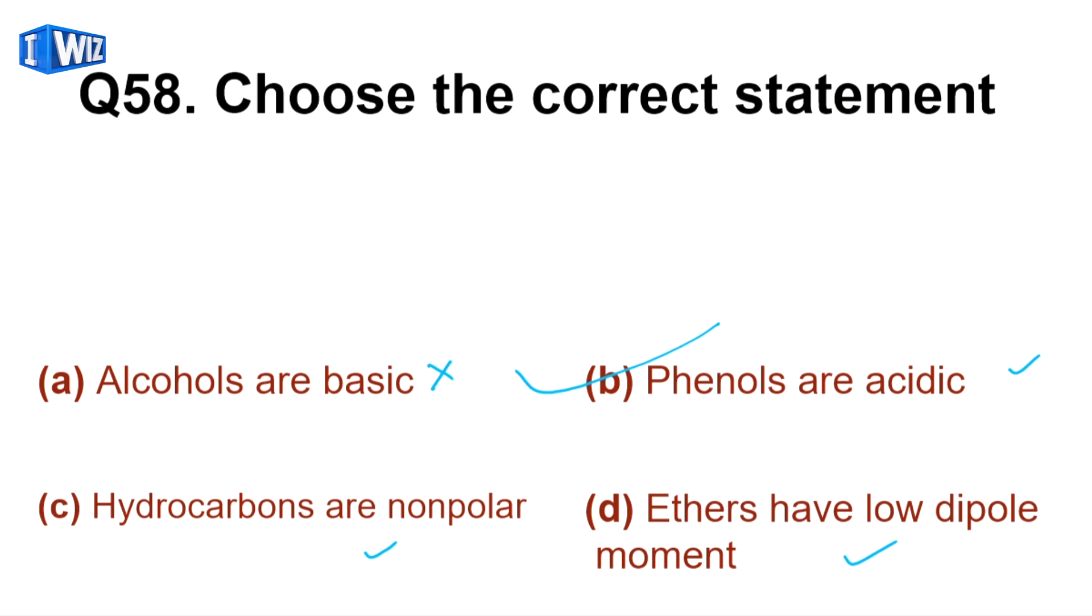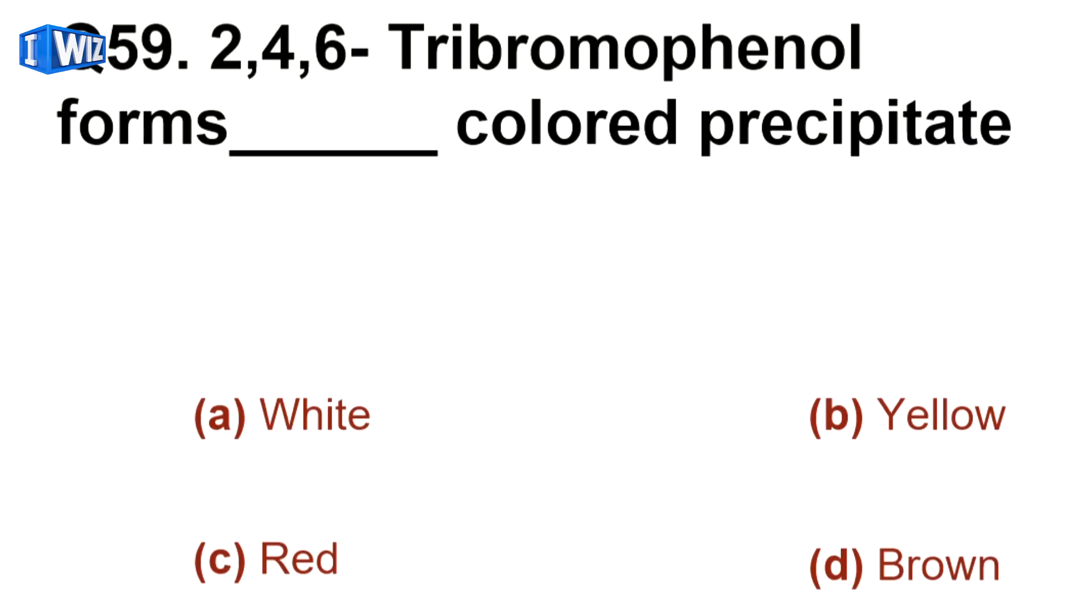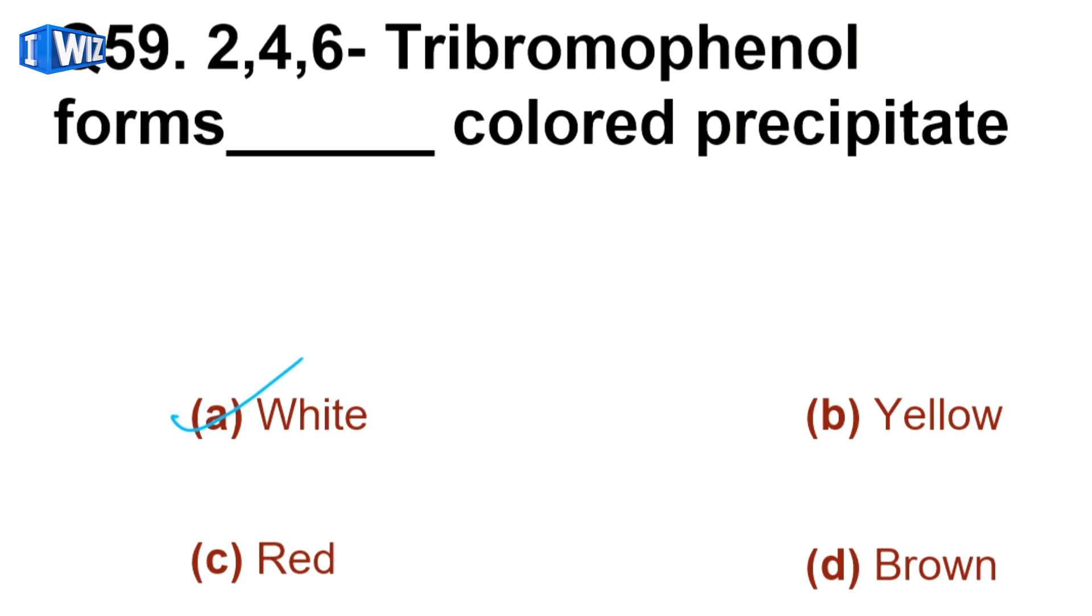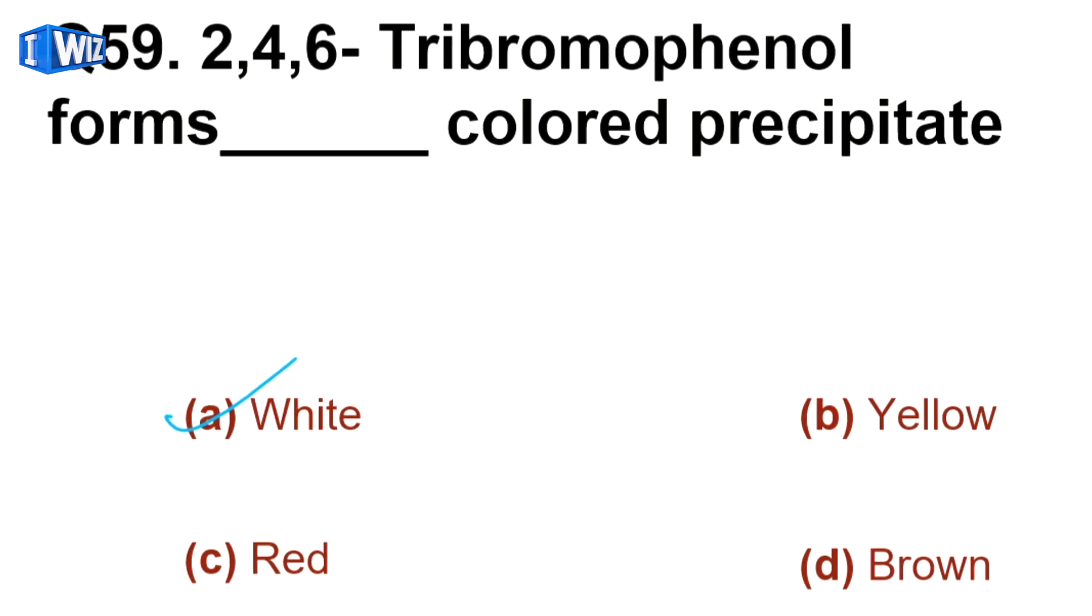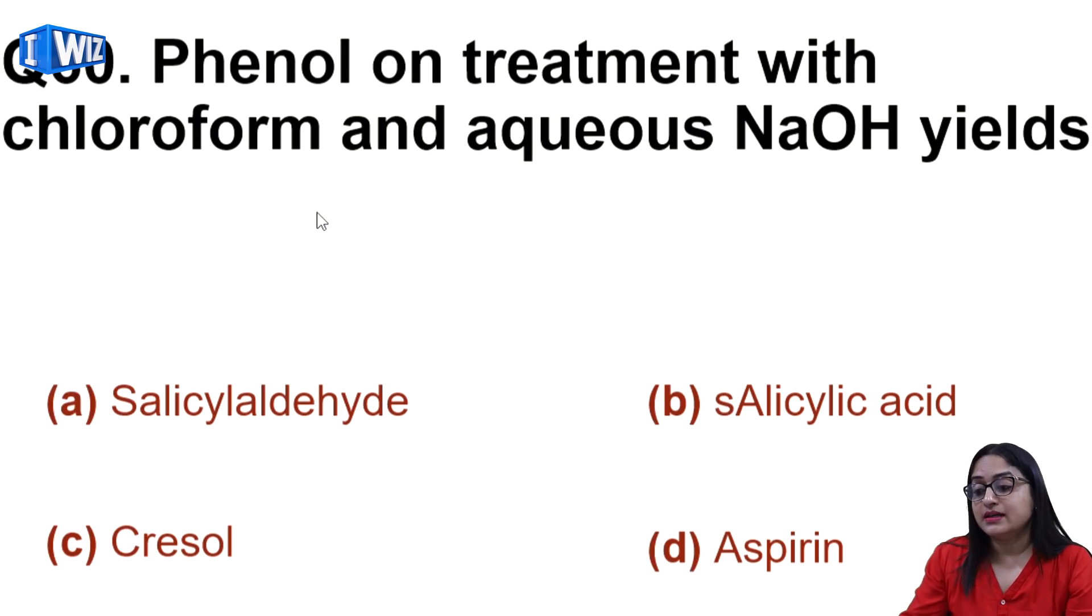Next is 2,4,6-triabromophenol forms what colored precipitate? 2,4,6-triabromophenol forms white colored precipitate, which also acts as a distinguishing test.